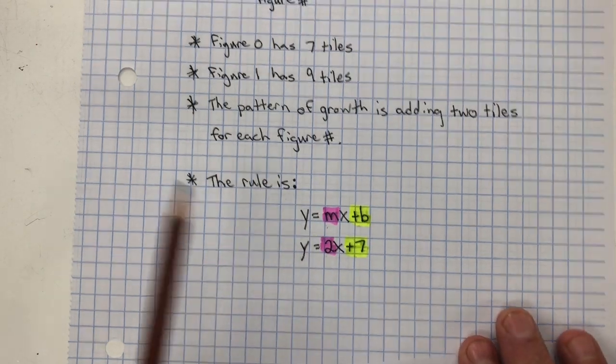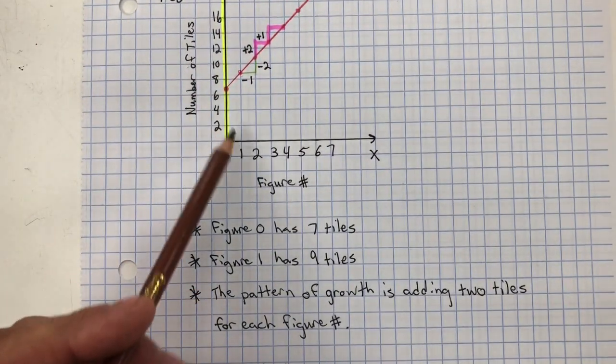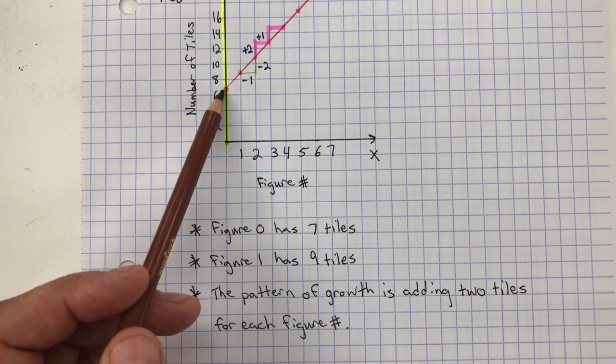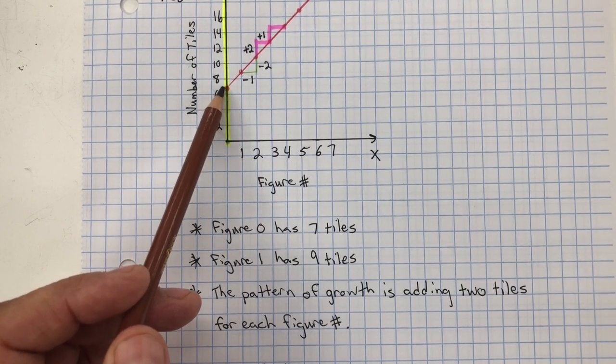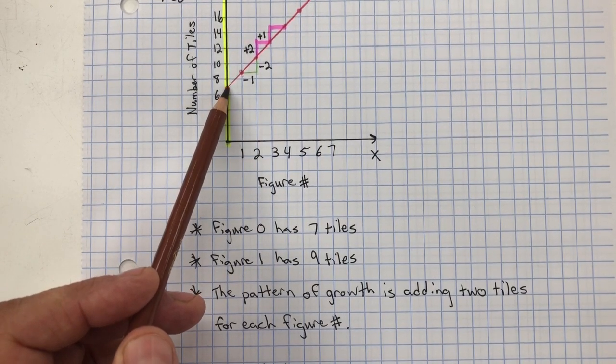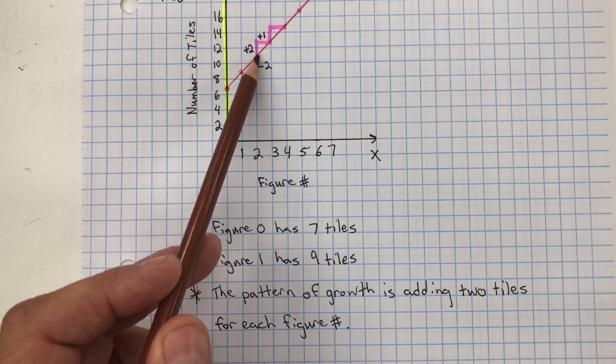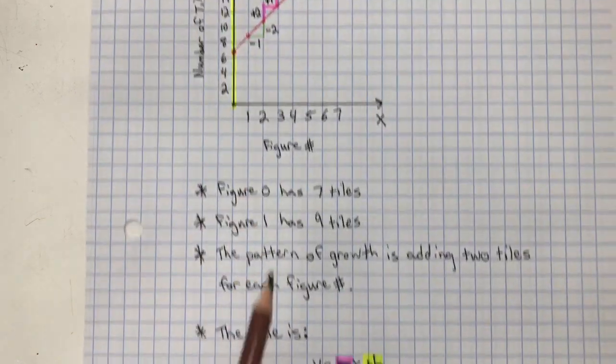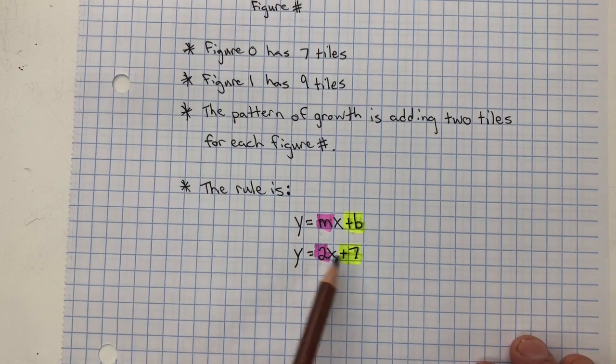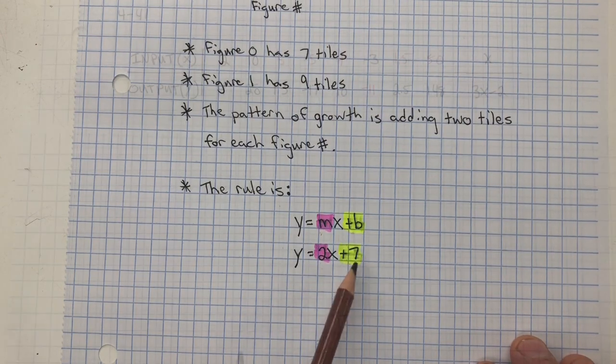And we have two. And you can see that here. Here's our B on the Y-intercept. On the Y-axis, your Y-intercept is positive seven. And your growth is two over one. Two over one. And the Y-intercept positive seven.